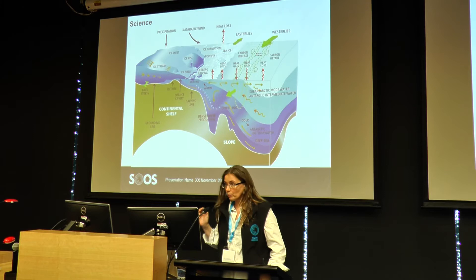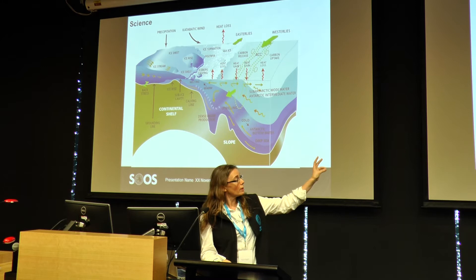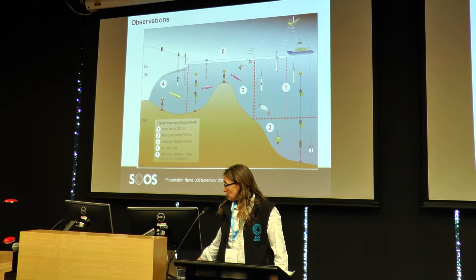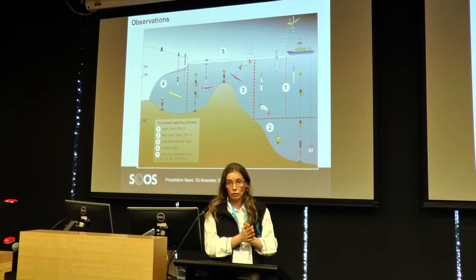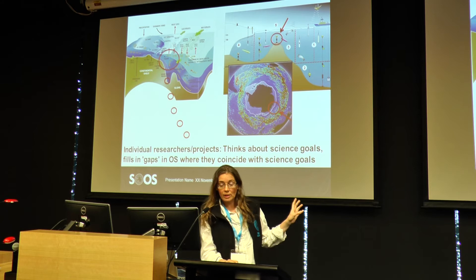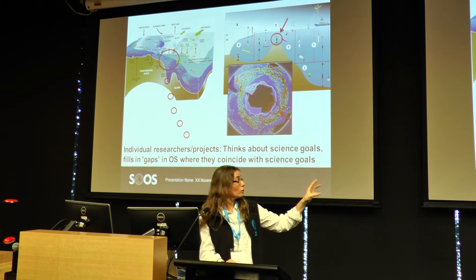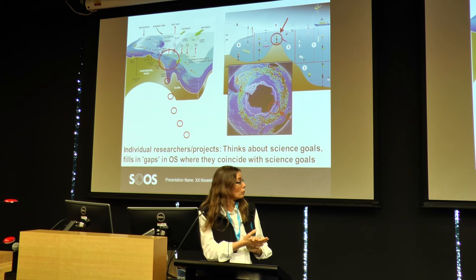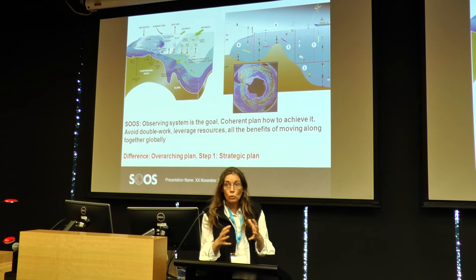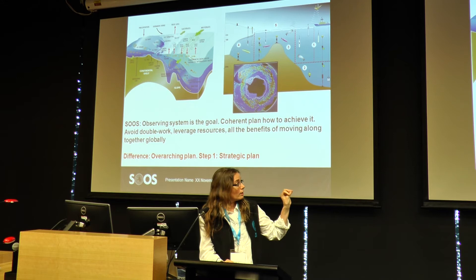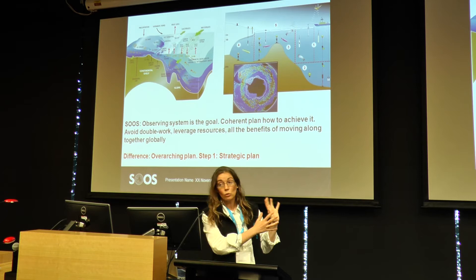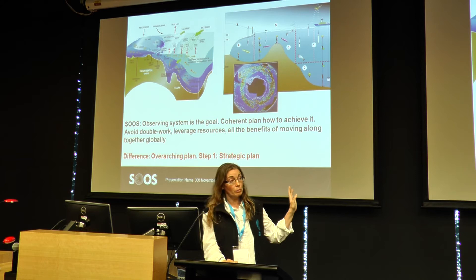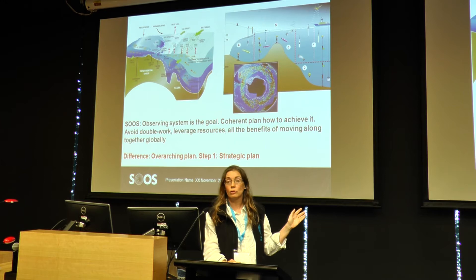We are all here because we are scientists, so we are all interested in one little bit of this overarching science goal. When we address that, we measure our little bit. But we all recognize the goal to get a more overarching observation system in place. When we work as individual scientists, we think about our individual science goals and fill in gaps wherever they happen to fit. The difference when working together in a coordinated effort is that the observing system is the goal. We can have a coherent plan, avoid double work, leverage resources, and have all the benefits of moving along together globally.